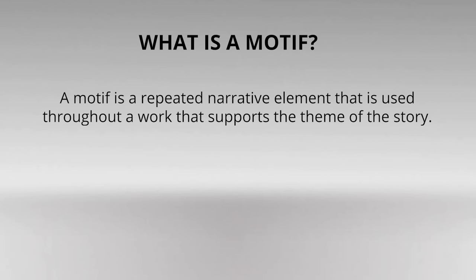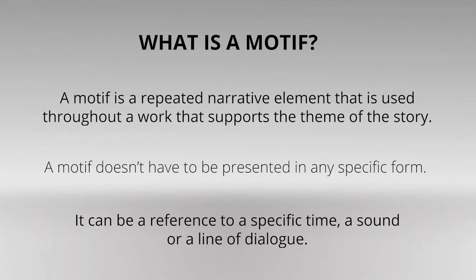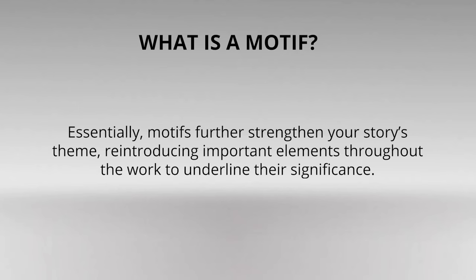So how does that apply to film? In this video, we'll clearly define what a motif is and how it differs from the theme of a story. We'll also take a look at how motifs are used in cinema. A motif is a repeated narrative element used throughout a work that supports the theme of a story. It can be a reference to a specific time, a sound, or a line of dialogue. Music, colors, and repeated events can also become motifs when used intentionally throughout a story. Essentially, motifs further strengthen your story's theme, reintroducing important elements throughout the work to underline their significance.